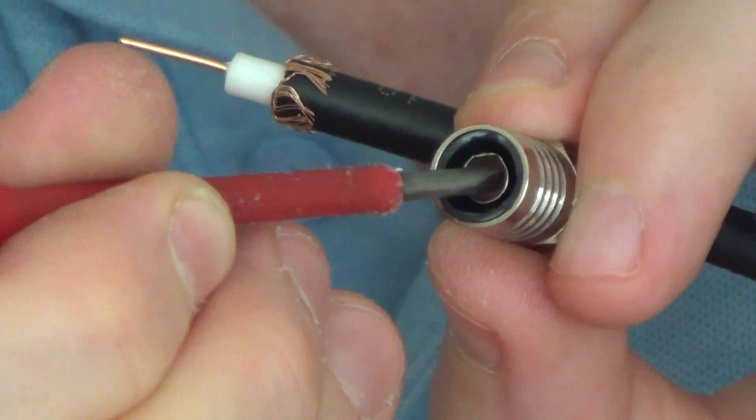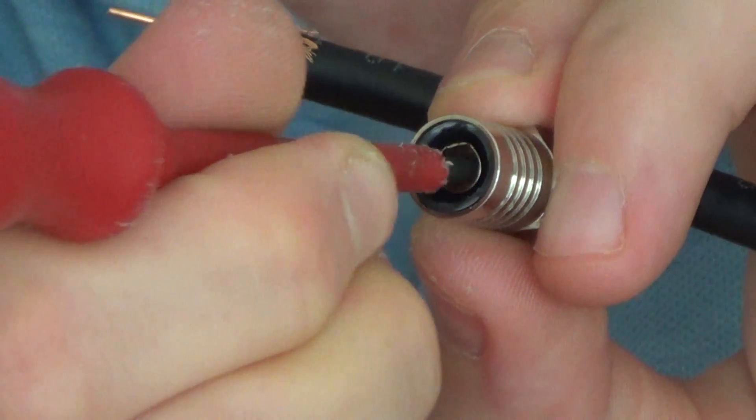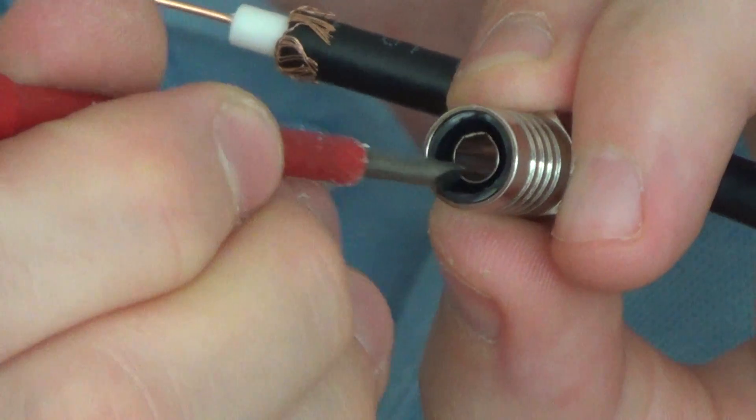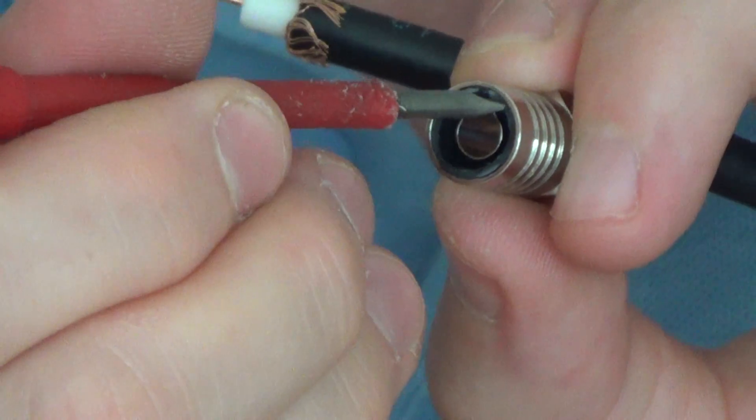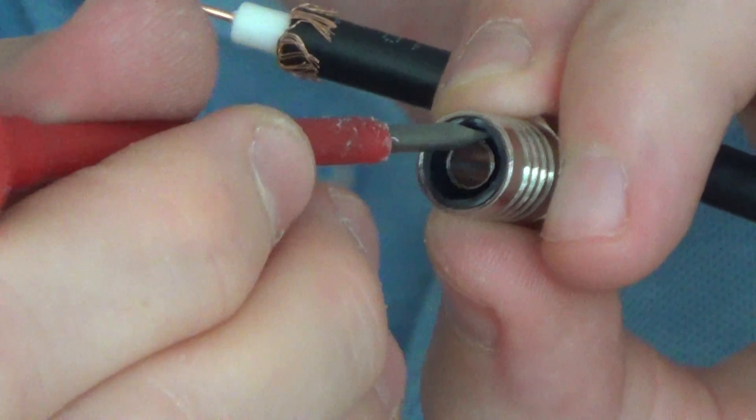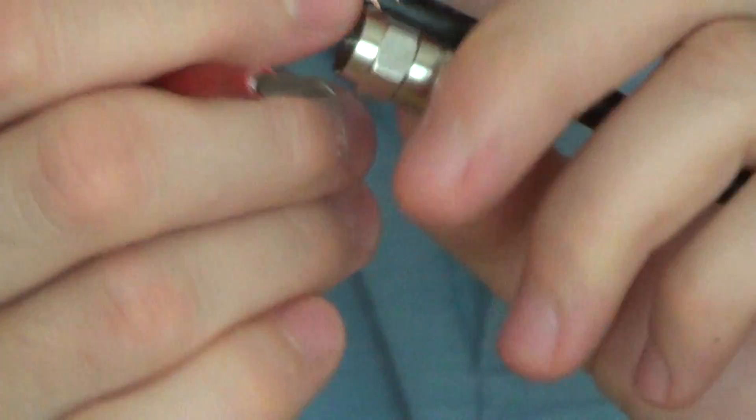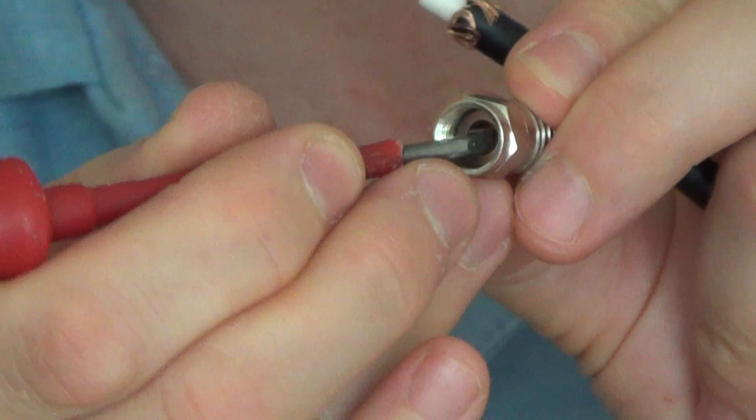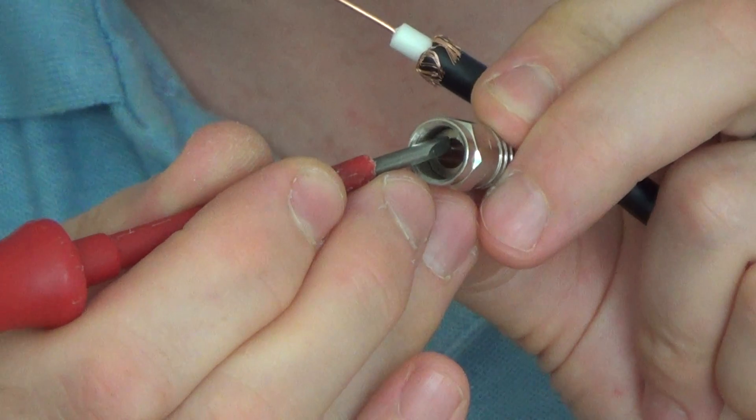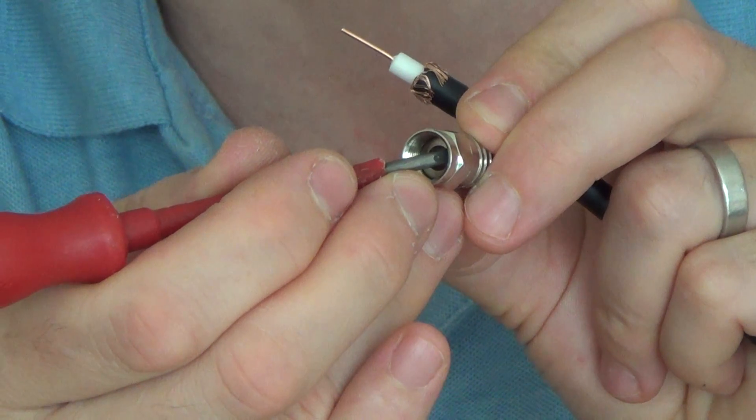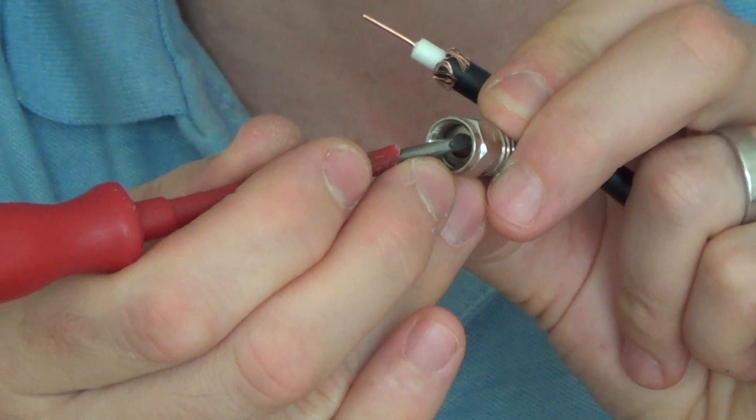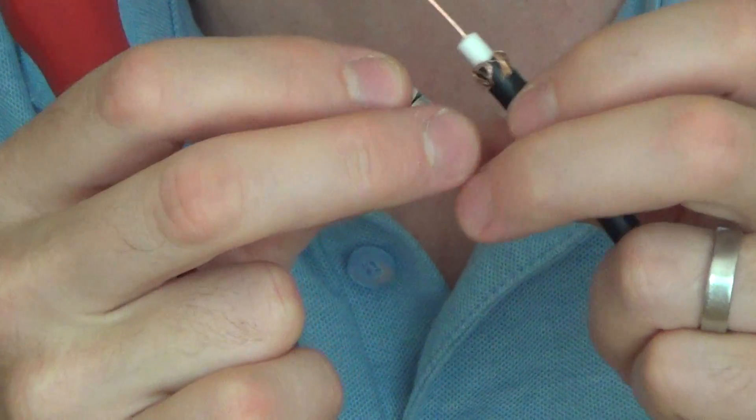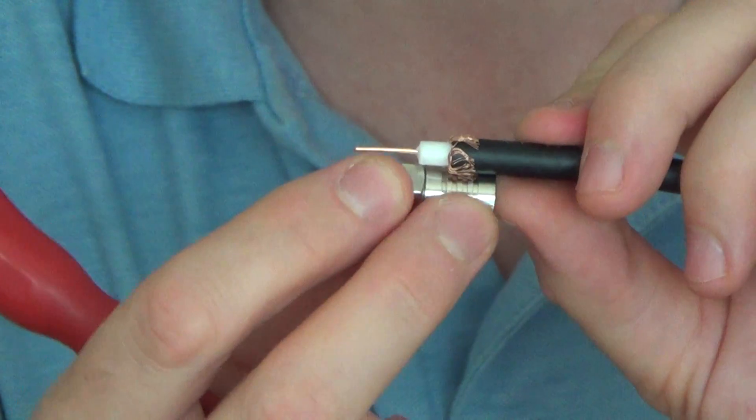The foam, the white foam and the central conductor will be passing through that bit there. And around the edge is where the rest of the cable is going to go. So the braid and the foil and the black sheath. And it has to be pushed on quite far onto the cable because the end of the white, the end of this white dielectric here needs to be level with this little shoulder in here. So the white foam is going to be level with it and then the central conductor is going to be sticking out from there.